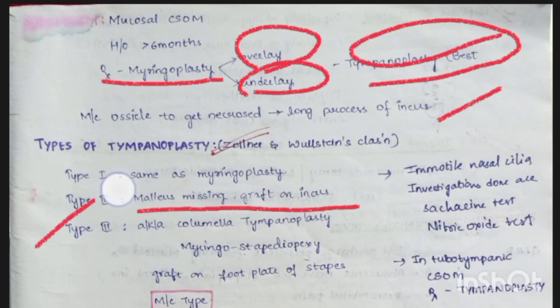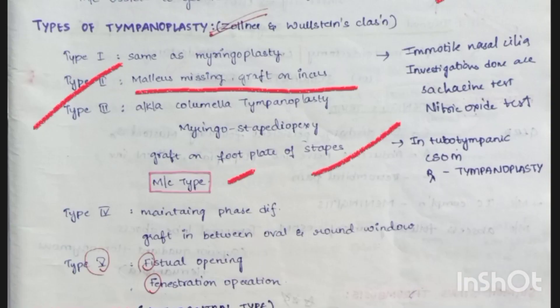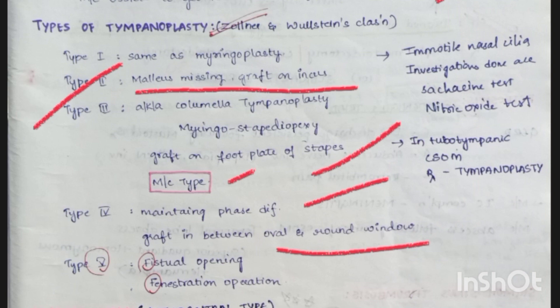Tympanoplasty types continued: Type 3 (columella tympanoplasty / myringostapediopexy) — graft on footplate of stapes, most common type. Type 4 — maintaining phase difference, graft between oval and round window. Type 5 — fenestration operation. In immotile nasal cilia syndrome, investigations include saccharine test and nitric oxide test.